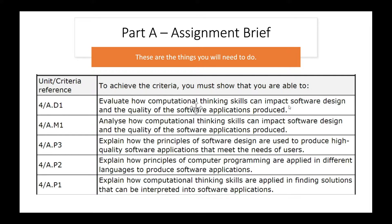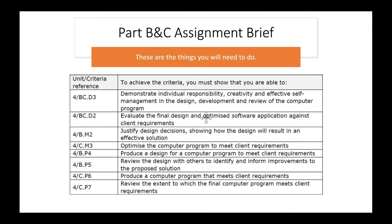D1 is going to be evaluate — evaluate how computational thinking skills can impact software design and the quality of software applications produced. Part A is where you research; this is where you sit down, use the spec, use the delivery guide, use Google quite heavily, use the book, and put together all the research you've found.